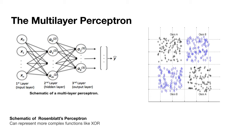Depending on the representation you want to capture, we have the output layer. This structure has been shown to capture much more complex functions, like XOR or functions that cannot be approximated by a linear function.